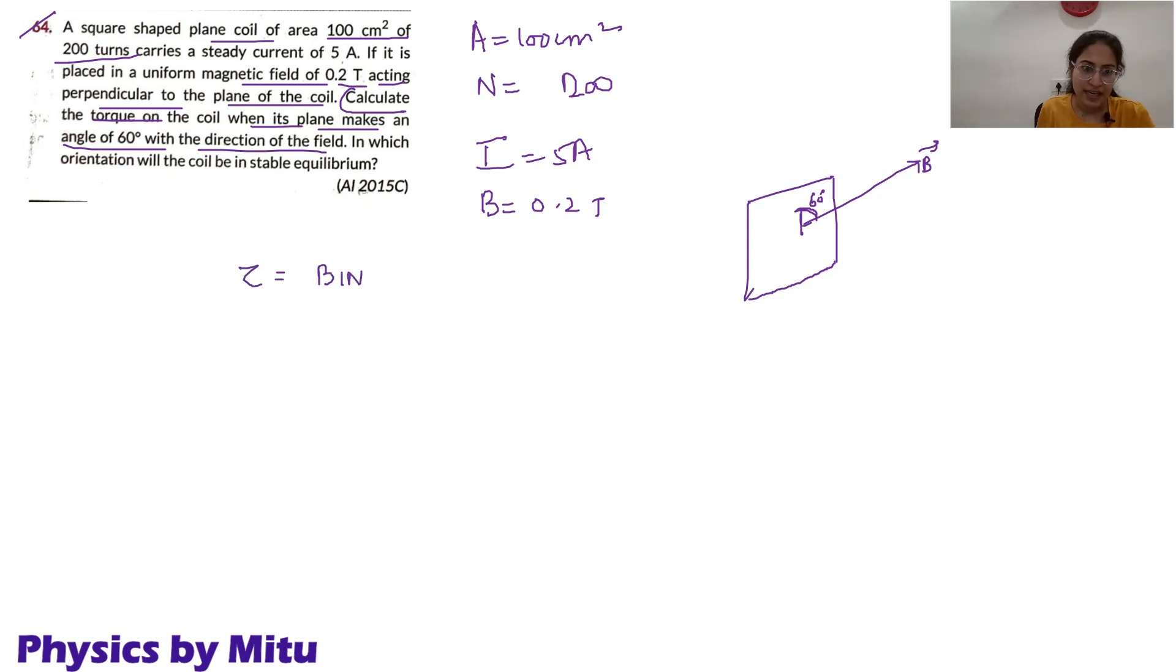Torque is B I N A sin theta, where theta is the angle between the area vector and the magnetic field. If you write this in vector form, you will write I A cross B. It is the angle between area vector and magnetic field.